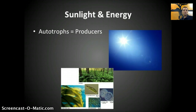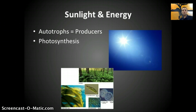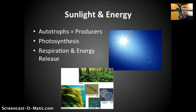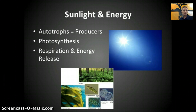Producers that use sunlight energy are referred to as autotrophs, and they use photosynthesis to create that energy. The process of aerobic respiration produces ATP, but it is not completely efficient — some energy is lost during that process, and actually it's quite a significant amount. That energy is generally lost in the form of heat as waste.